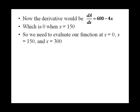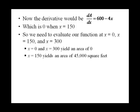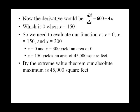So we're going to evaluate our function for area at x equals 0, x equals 150, and x equals 300. Well, at 0 and 300, we get an area of 0. So those are not going to be the maximum. At 150, we get an area of 45,000 square feet, which will be our maximum possible area. The extreme value theorem guarantees us that.